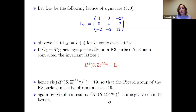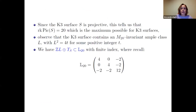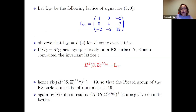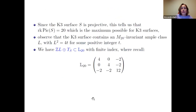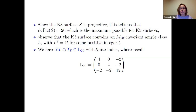Since we want a non-symplectic automorphism, Nikulin's result tells us the K3 is projective, giving one more class which is positive. This class cannot be in the negative-definite orthogonal complement, so the Picard number must be exactly 20. Since L₂₀ is 2 times an even lattice, the square of the ample invariant class is a multiple of 4 — here it is 4 or 8 — and the transcendental lattice has a specific form.